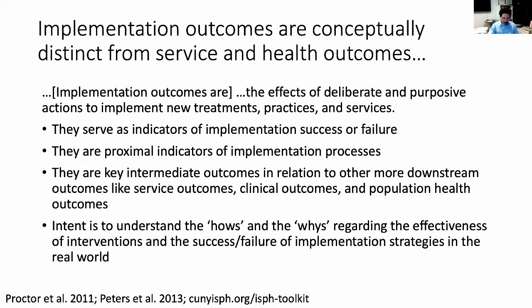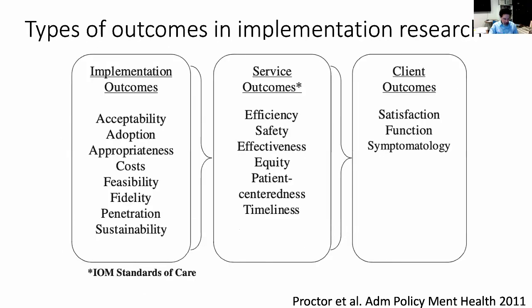Implementation outcomes themselves are those things expected to be directly impacted by the implementation processes you're putting in place or studying. They serve as indicators of implementation success or failure. They're proximal indicators of implementation processes and intermediate outcomes to more downstream outcomes like service outcomes, clinical outcomes, and population health outcomes. You choose these outcomes because your intent is to get insights about the hows and whys regarding the effectiveness of interventions and the success and failures of implementation strategies in the real world. In implementation research, we're focused on things like acceptability, adoption, feasibility, and sustainability.